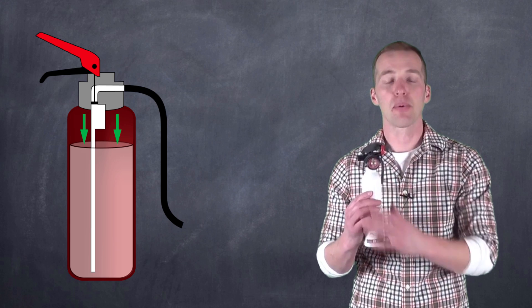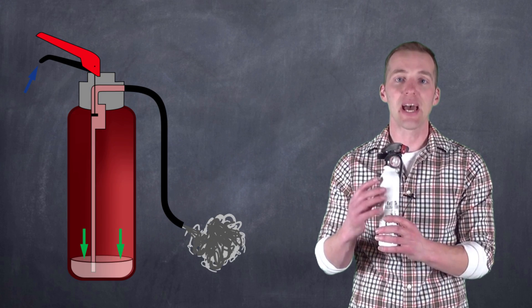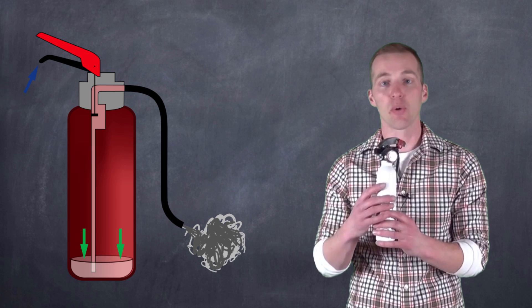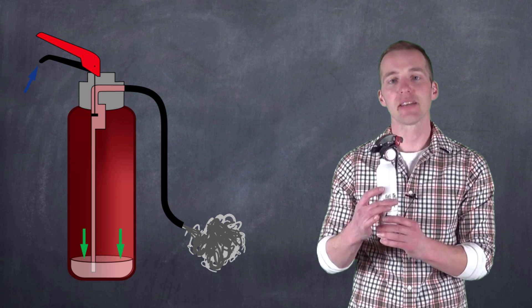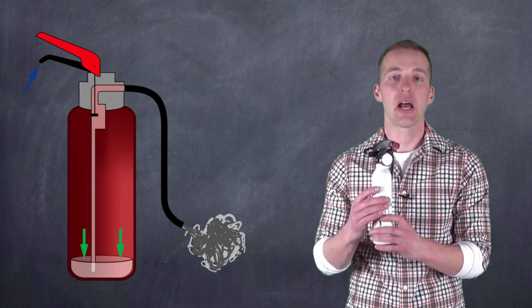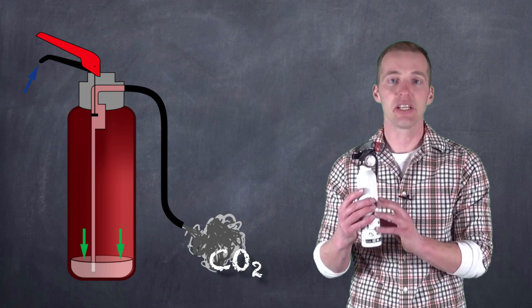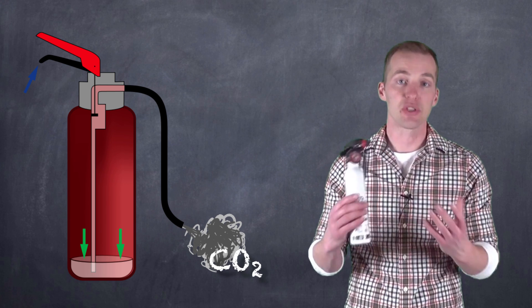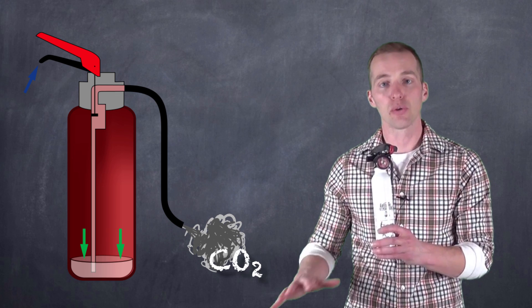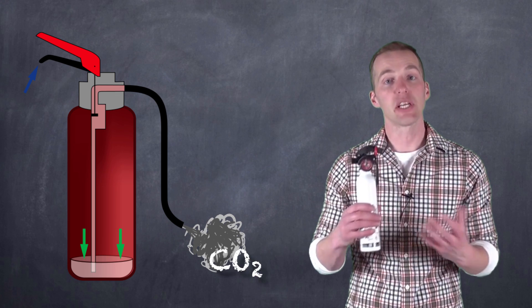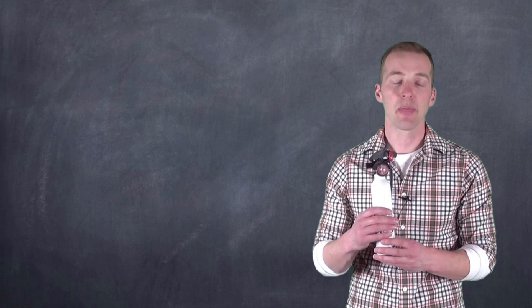So, when we pull the pin and depress the nozzle, what we are going to get is a gas that's being propelled, going from an area of high pressure inside the canister to an area of low pressure outside the canister. In some cases, there is just carbon dioxide gas in here. The carbon dioxide gas, which is heavier than air, is going to go low to the floor, and it's basically going to cut off the oxygen supply.